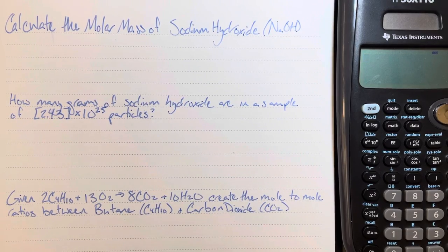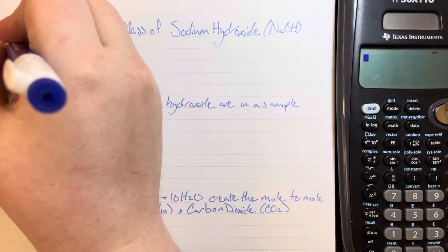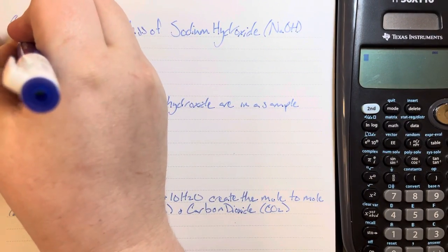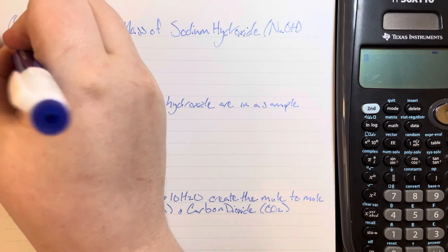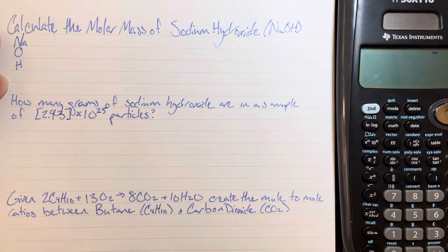Calculate the molar mass of sodium hydroxide. The first thing you're going to do is list out all of the elements present in sodium hydroxide. So you have sodium, oxygen, and hydrogen.